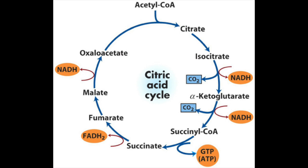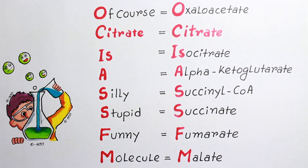Then the next products step by step are isocitrate, alpha-ketoglutarate, succinyl coenzyme A, succinate, fumarate, and malate.